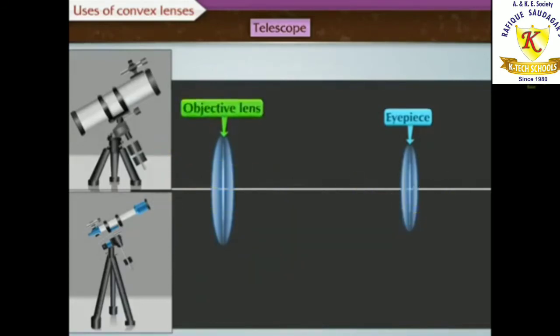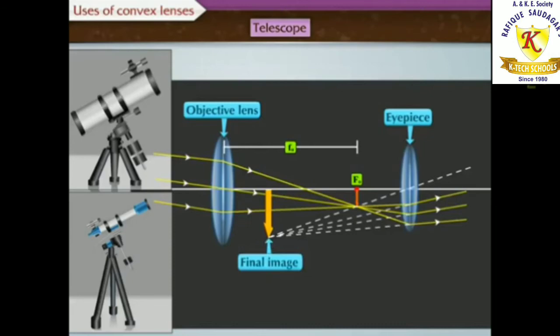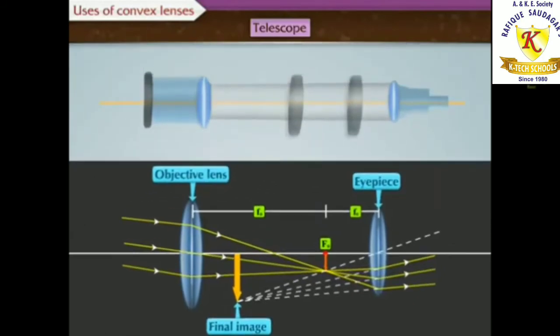Objective lens has large diameter and a larger focal length because of which maximum amount of light coming from the distant object can be collected. On the other hand, the size of the eyepiece is smaller and its focal length is also less. Both the lenses are fitted inside a metallic tube in such a way that the distance between them can be changed. The principal axes of both the lenses are along the same straight line.